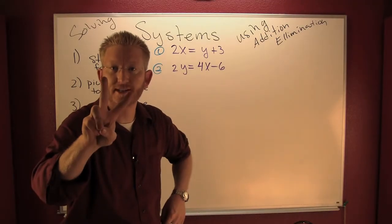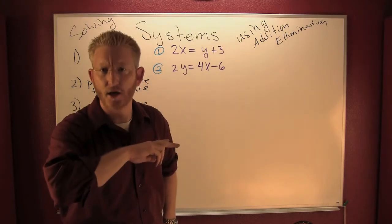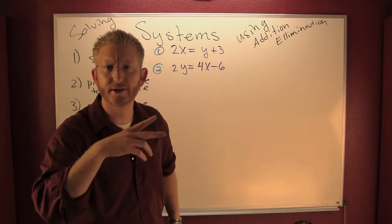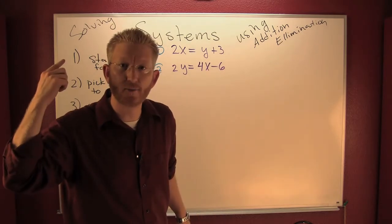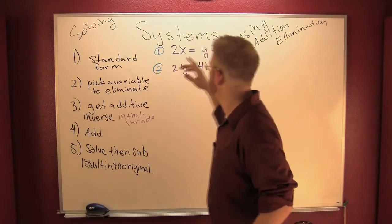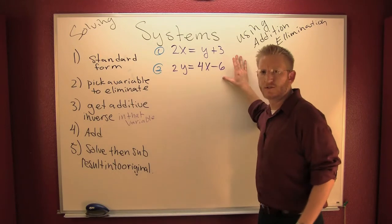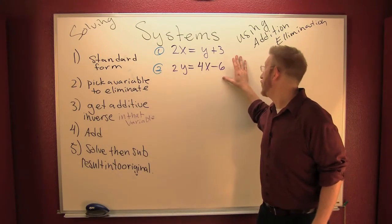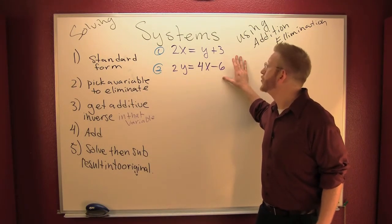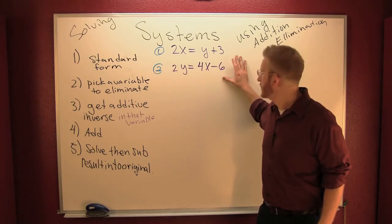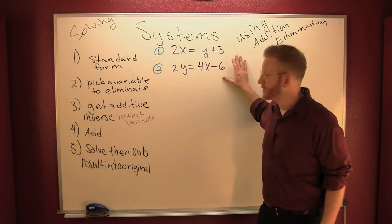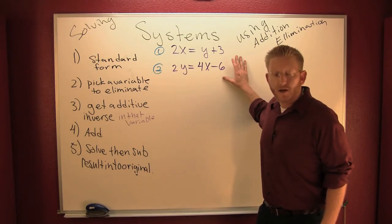Our next example, example two, solving with the elimination method. Here we're going to go with one that's a little harder. We have to complete step one on this one. Is my system 2x = y + 3 and 2y = 4x - 6 in standard form? It's not, so we need our x's on one side and our numbers on the other.